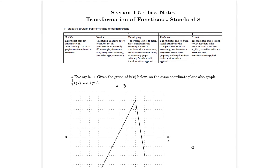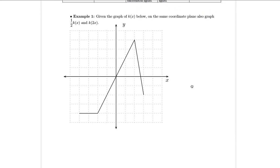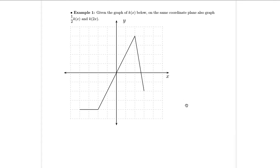Let's start with this one. I want us to make two graphs here, and this would be a really good one to pause and try yourself. On the same grid, try to graph one half k(x) and k(2x), given that the graph already shown is just plain old k(x). Give that a try, see if that makes sense to you, and then we'll come back and look at it together. We'll use red for the first one and green for the second one.